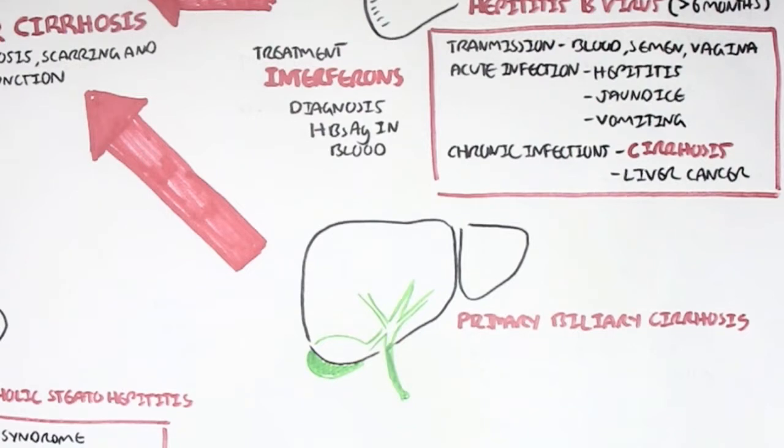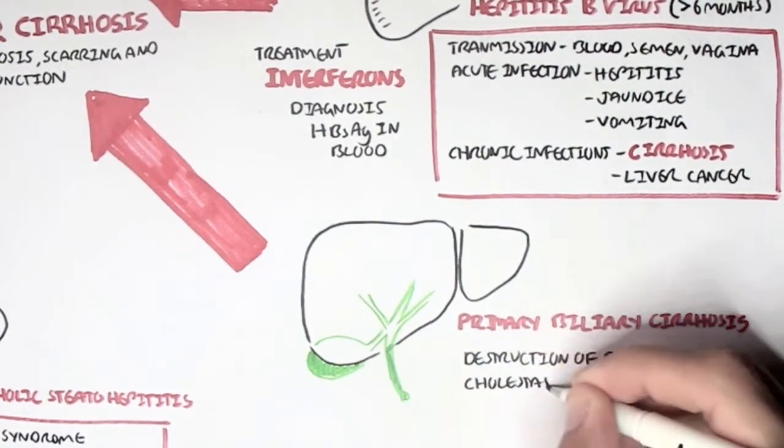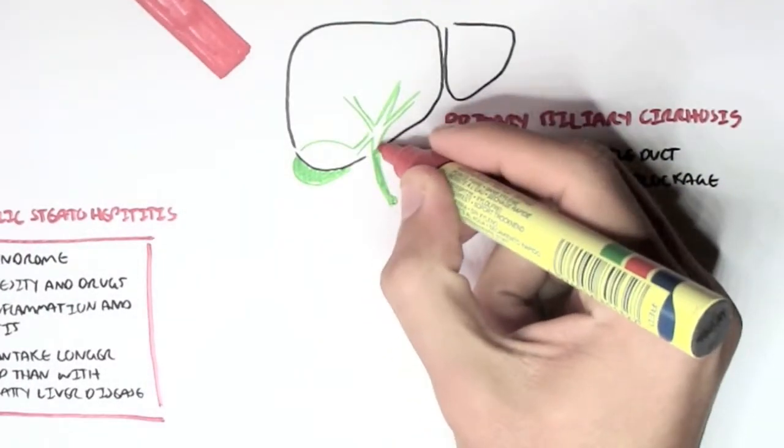The bile duct is where the bile flows from the gallbladder and the liver. This can cause cholestasis, which is bile flow blockage.